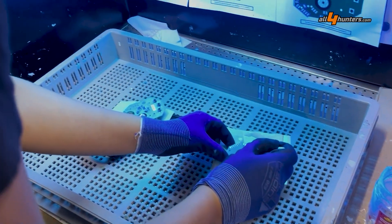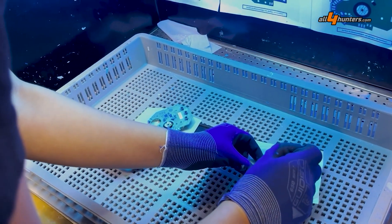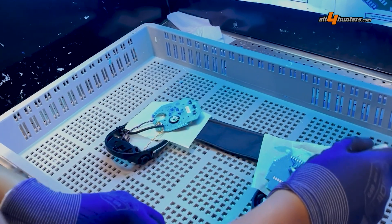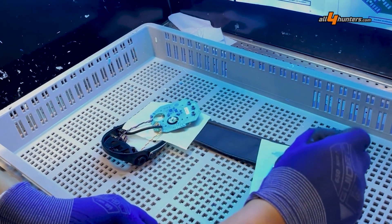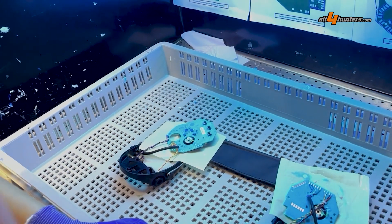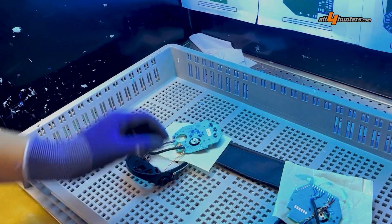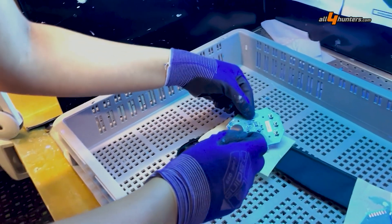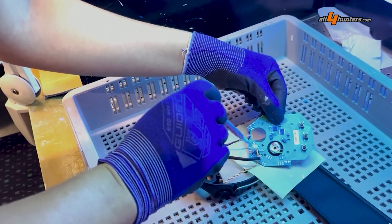When all the cables are soldered on, the board is sealed with a 2K UV varnish so that neither moisture nor sweat can penetrate the hearing protection, damage the soldered joints, or damage the board or the electronics.